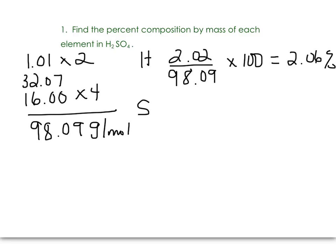Now we'll do the same thing for sulfur. 32.07 in the numerator, and in the denominator, the total molar mass for the compound, times 100 to make it a percent. We get 32.69%.